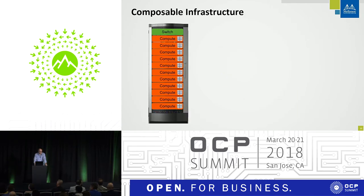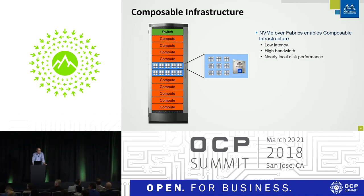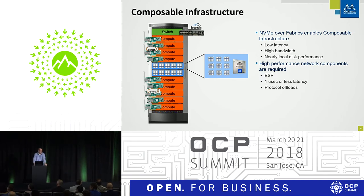Putting it all together: composable infrastructure separates compute and storage, allowing dynamic allocation of the right amount of storage and compute for each application. NVMe over Fabrics with its low latency, high bandwidth, and nearly local disk performance enables that. But you also need a high-performance network — Ethernet Storage Fabric with its ultra-low-latency components and protocol offloads.